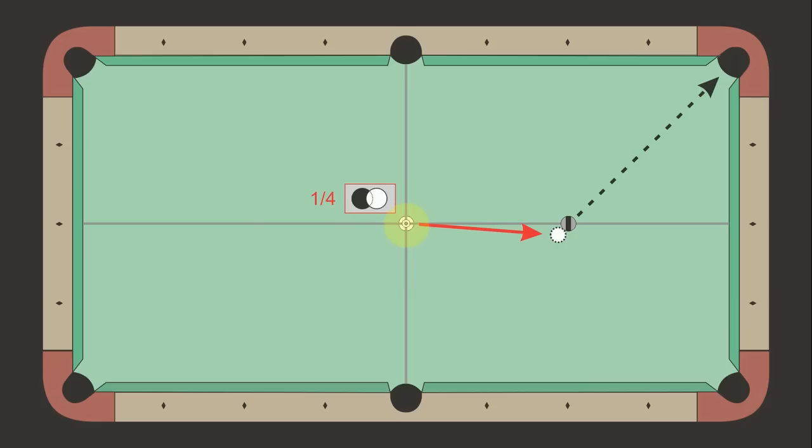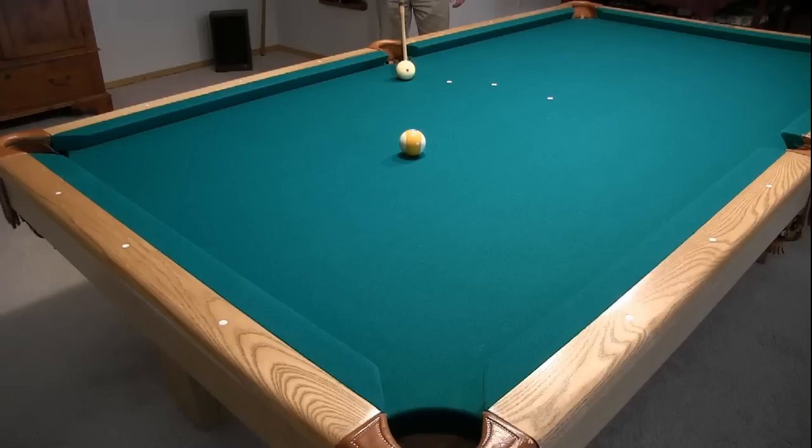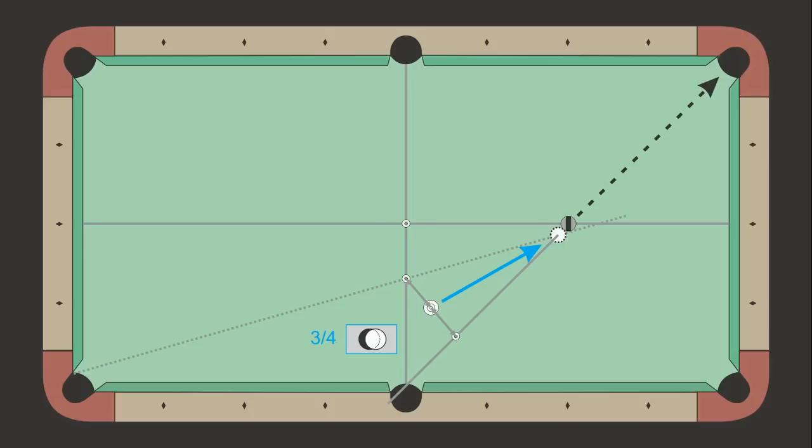A quarter ball hit can be created by placing the cue ball at the center of the table. To locate the cue ball position for a three-quarter ball hit, first place a donut along the line from the side pocket to the corner. Again, you can use your cue to help visualize this line. Then place a donut exactly between this donut and the half ball hit donut. This is the required cue ball position for a three-quarter ball hit.